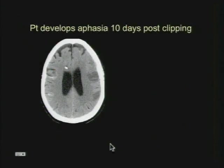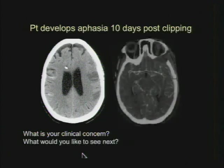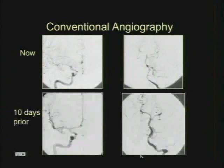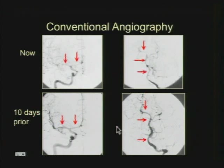This is the same patient who develops aphasia 10 days post-clipping. On the non-contrast CT, the patient has an EVD in place — these patients often develop hydrocephalus. Now there are wedge-shaped areas of hypodensity. The primary concern is vasospasm, and these are infarcts related to vasospasm — you want a CT angiogram. The CTA shows diffuse caliber narrowing involving the M1s and A1s. Comparing the angiogram at the time of vasospasm to the pretreatment angiogram, you can see severe diffuse narrowing involving the A1 and M1 segments, with narrowing also involving the right PCA, basilar artery, and vertebral artery — diffuse vasospasm in the posterior circulation as well.